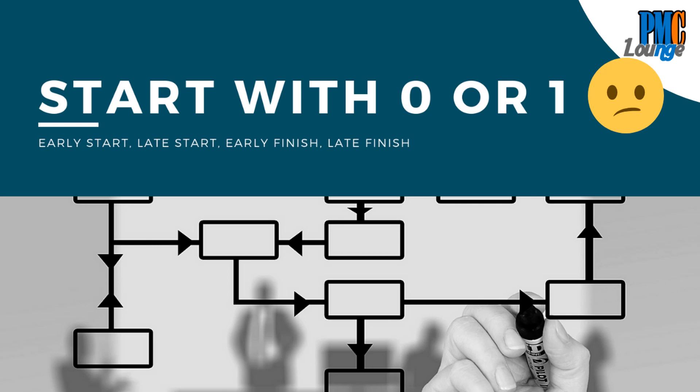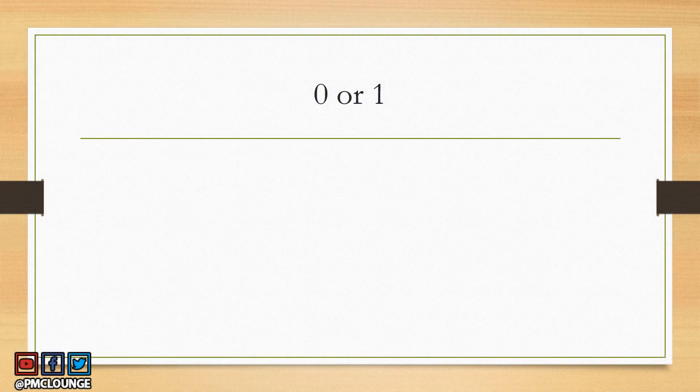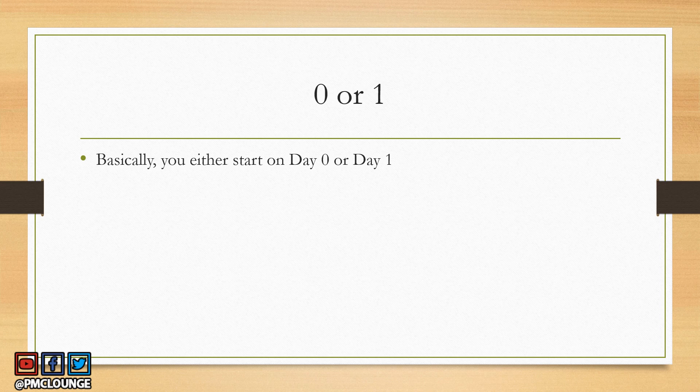One thing we did not cover yet is that there are actually two ways to calculate the early start, late start, early finish, and late finish values. It all comes down to whether you start with zero or one. When you look at a network diagram, whether you start at day zero or day one is going to change everything, including the formula that you use to calculate those values.